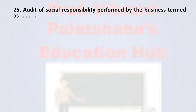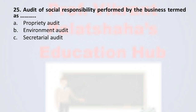Question number twenty-five: audit of social responsibility performed by the business is termed as — option A proprietary audit, option B environment audit, option C secretary audit, and option D social audit. The correct option is option D, social audit.